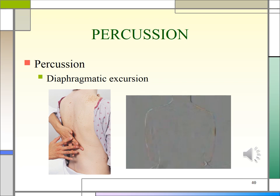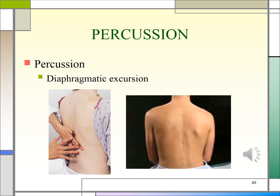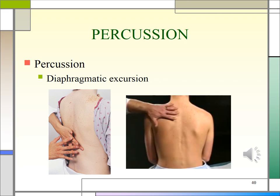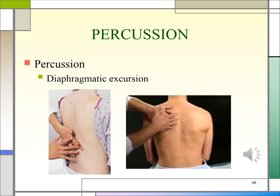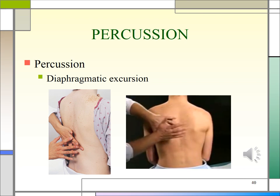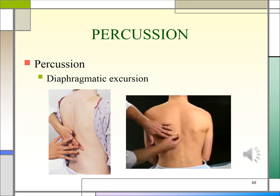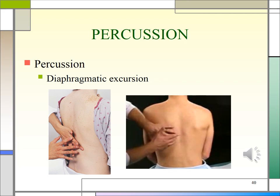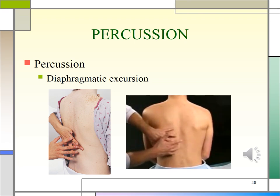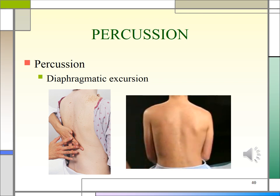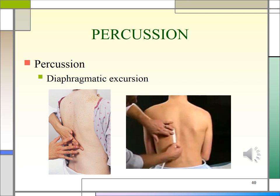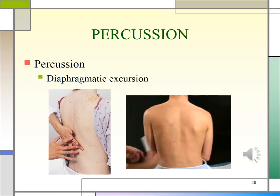We're going to percuss down your back for diaphragmatic excursion. What I want you to do is take a deep breath in, let it out, and then hold it. I will do some percussion. Then I will need you to take another deep breath in and hold it, and I will percuss some more. [Percussion performed.] Now take a deep breath in and hold it... and you can let it out. As I measure that, it comes to be about five centimeters, which is an expected amount of diaphragmatic excursion.